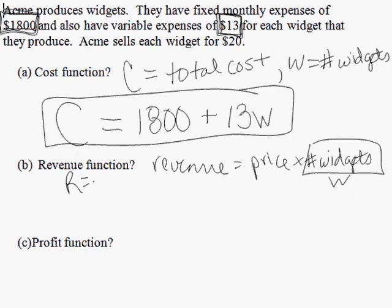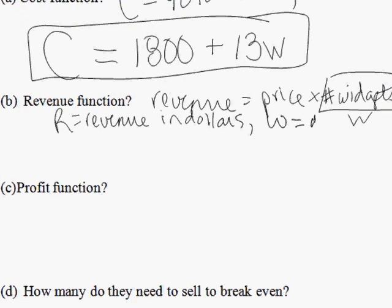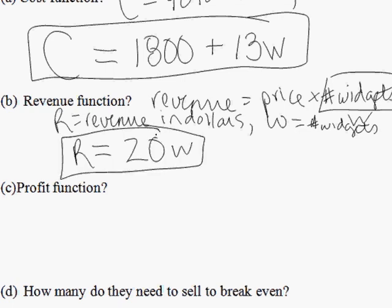If I define R as the revenue earned in dollars, and we already have that W is number of widgets, then our revenue function is price, which they said was $20 that they sell their widgets for, times W. Price is $20 times the number of widgets they sell is W.